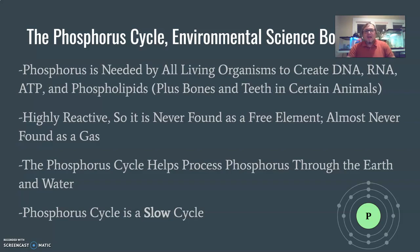Phosphorus is highly reactive. It's very quick to react and will not stay as a free element very often — it's not usually found as a free element, you don't just find phosphorus by itself. It's usually found as a compound. It's also almost never found as a gas, so we're not going to see a gaseous form of phosphorus as part of this cycle.